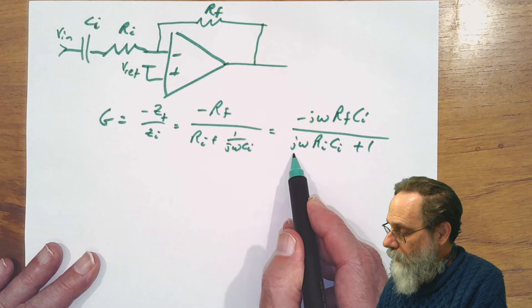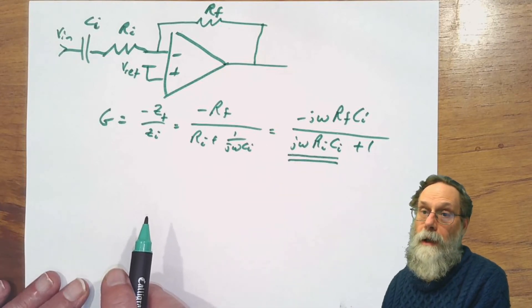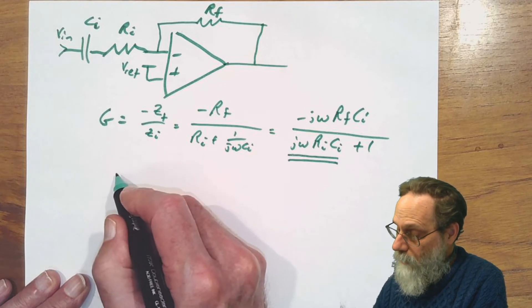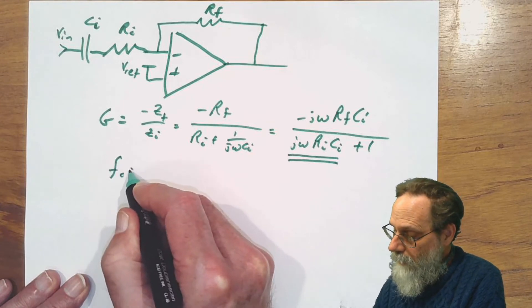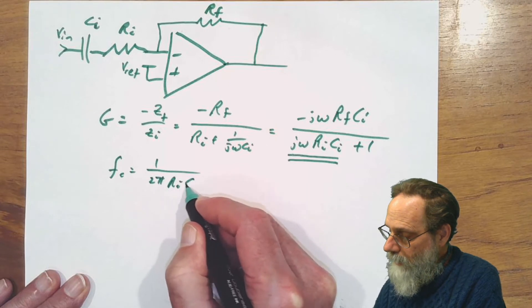We're going to get a corner frequency here that depends on RI CI. So corner frequency is going to be one over two pi RI CI.